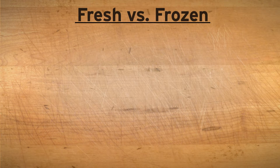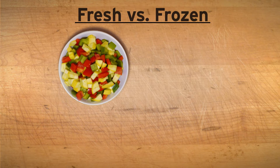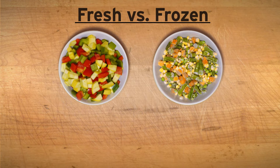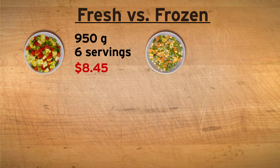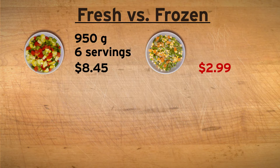I have two total costs to calculate: the cost with the fresh vegetables, and the cost with the frozen ones. I can't solve this problem without first knowing how much both the fresh and frozen vegetables cost. The recipe calls for about 950 grams of fresh bell peppers and squash, enough to make six servings. That amount of vegetables costs $8.45. The frozen vegetables come in bags that cost $2.99, and each bag has 454 grams of vegetables. We'll have to do some math to figure out how many servings that is. This is all the information we need, so let's work to find the solution.